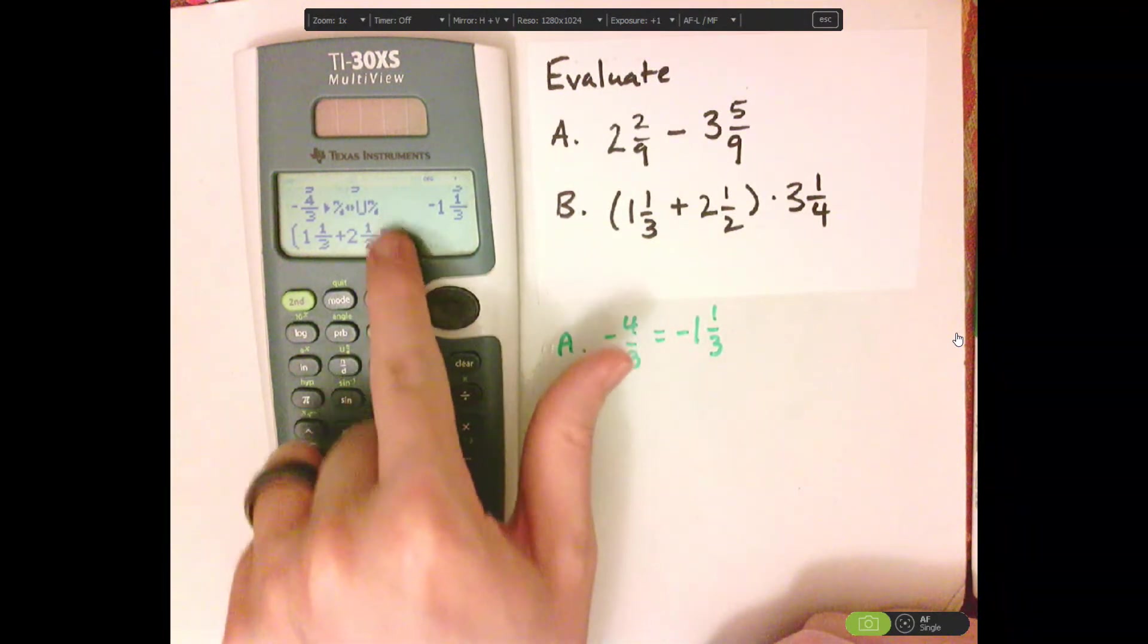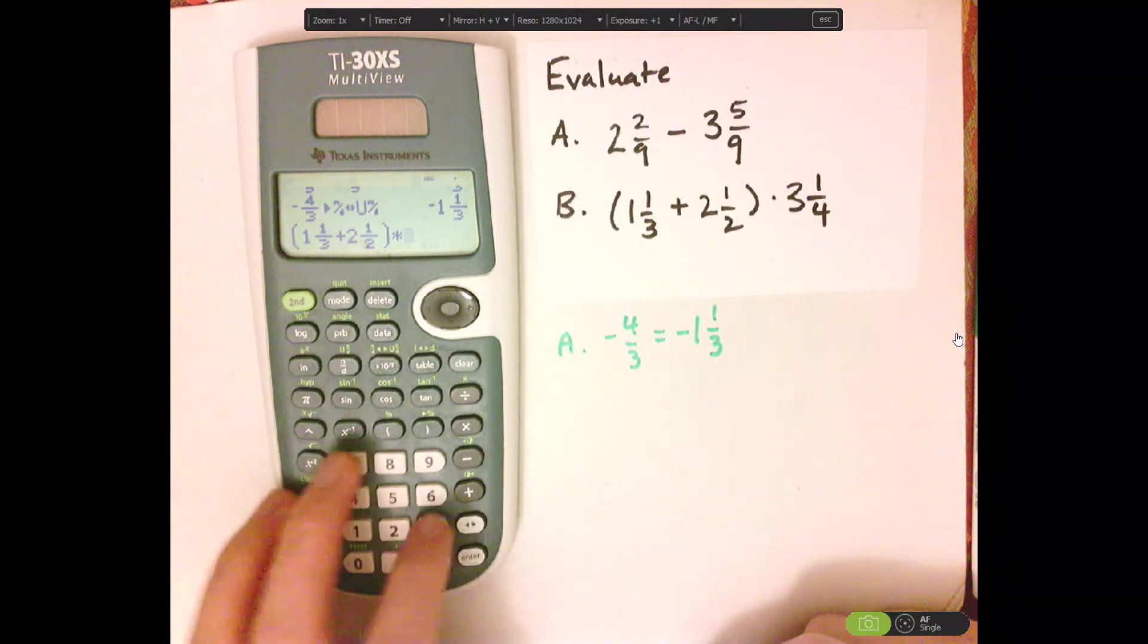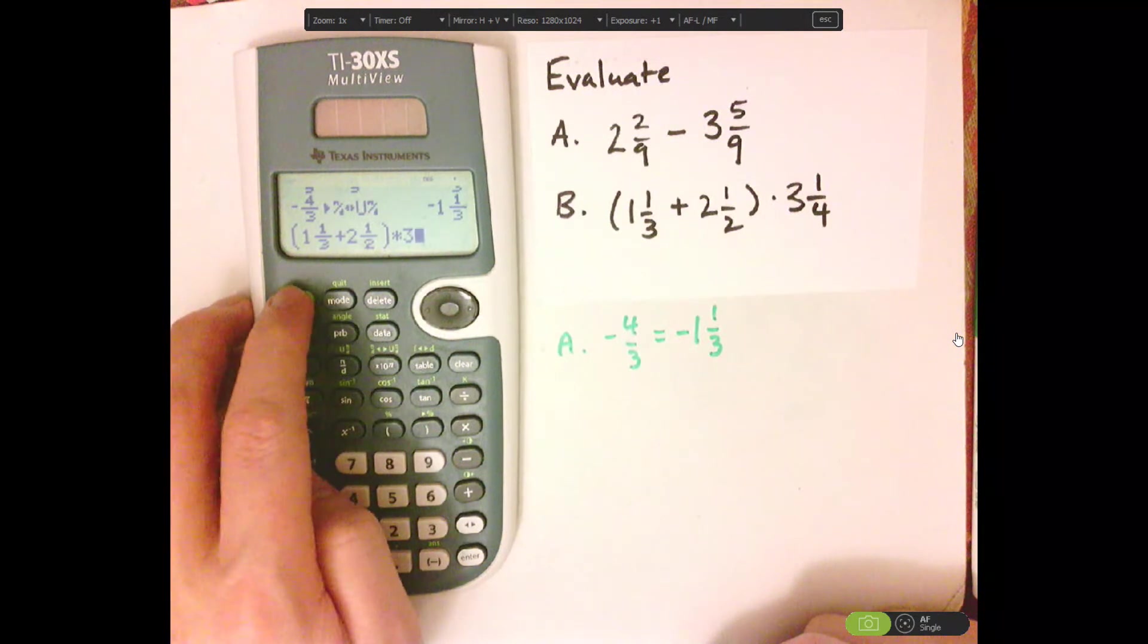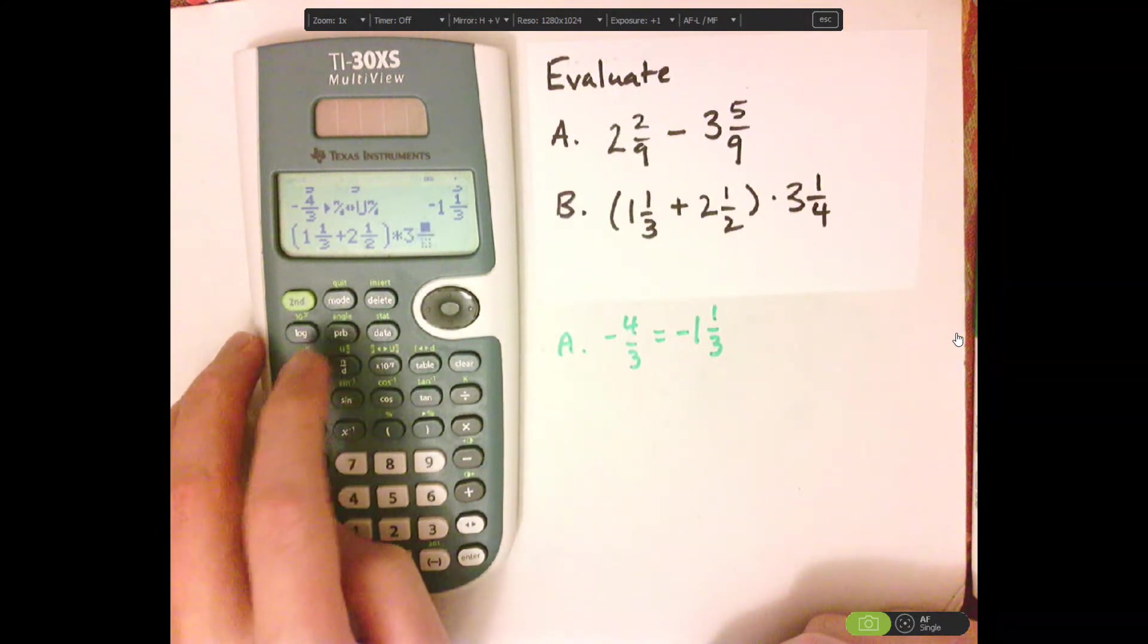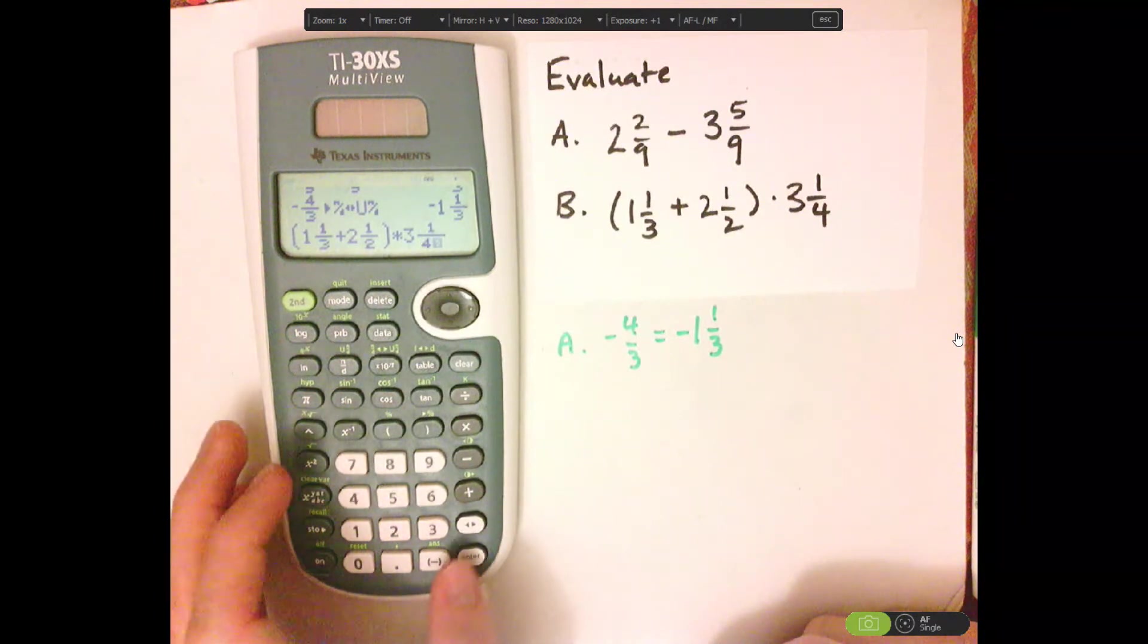One half, click over, now I'm on the side here. So close the parentheses, times three and a fourth. So second, like that, one, fourth. There we go.